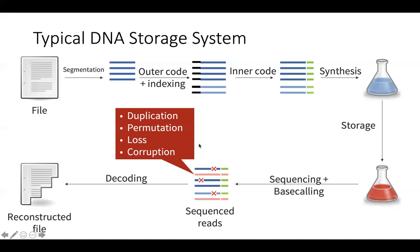Unfortunately, this is not exact. There are several things that happen. Due to the fact that sequences are in solution, you have a lot of duplication. You might have sequences permuted, for which we added the index. Due to the random sampling process, you might just miss some sequences and not get any copy of them. And finally, due to errors in synthesis, sequencing, and base calling, you have a lot of corruption — substitutions in some places, some bases are deleted, some extra bases are inserted. For that, we need error correction codes.